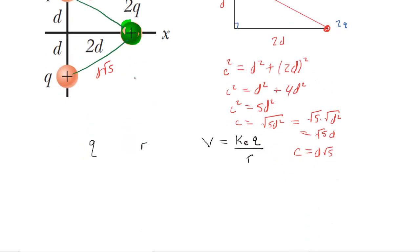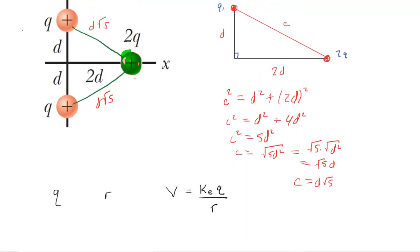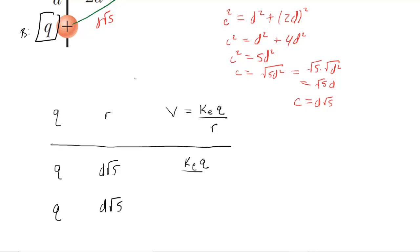We'll fill the information into a chart to keep ourselves organized. We have two charges contributing to the total electric potential — one at location A and the other at location B. Each of those charges is just Q; they're not different. The distances are also the same: both D√5. Since the charge and distances are the same, each contributes the same electric potential: K_E times Q over D√5.